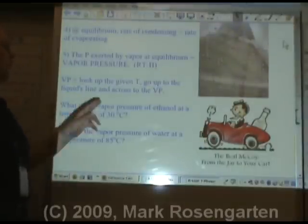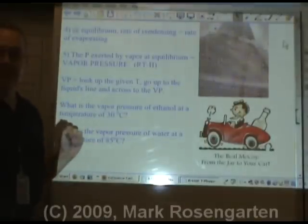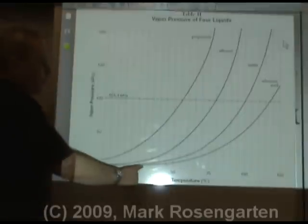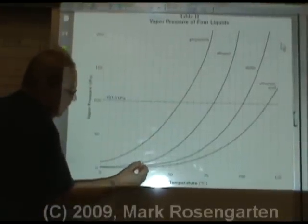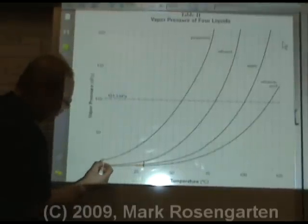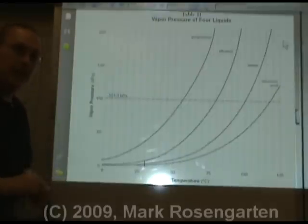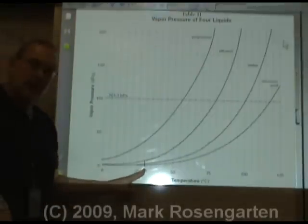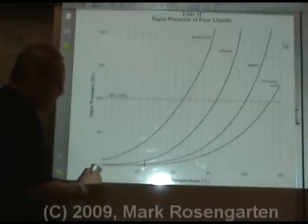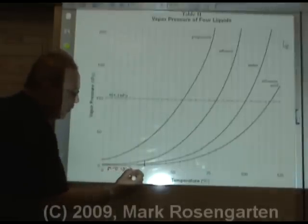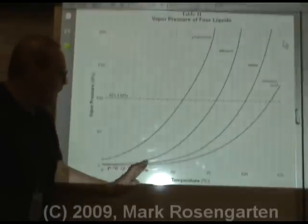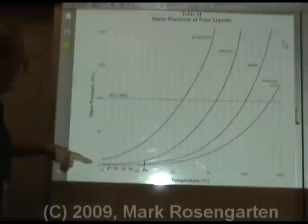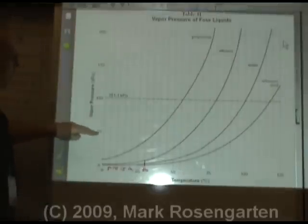This is reference table H. It gives you the vapor pressure in kilopascals of four liquids as they evaporate at different temperatures. If we want to find the vapor pressure of ethanol at a temperature of 30 degrees, we start at 30 degrees on the x-axis — which goes up by intervals of 5 — go up to the ethanol line, and shoot across to the y-axis. That reads about 10 kilopascals.